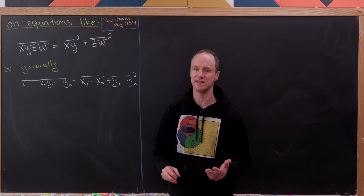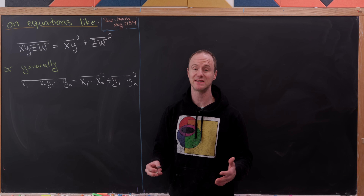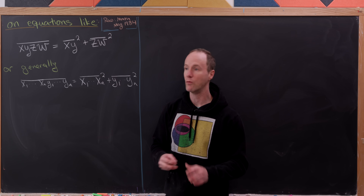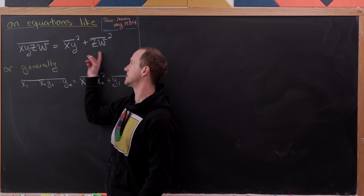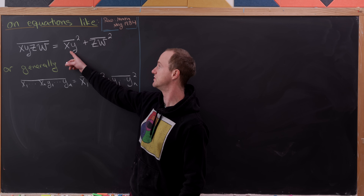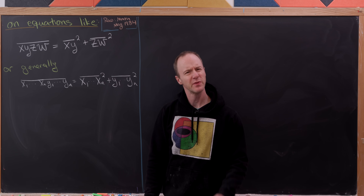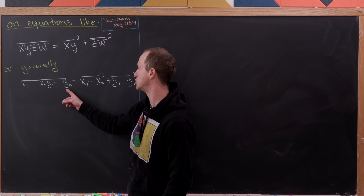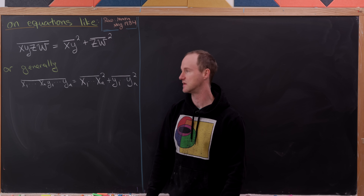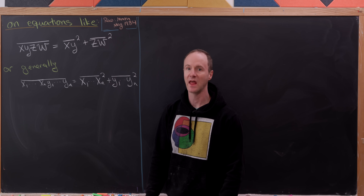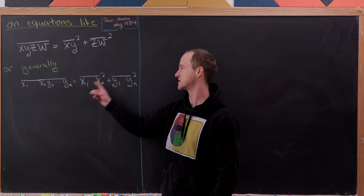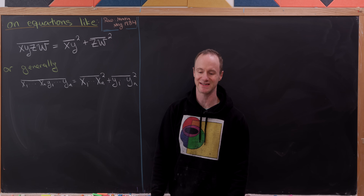We're assuming that x, y, z, and w are base 10 digits, so they're between 0 and 9. Our goal is to determine when it's possible for this four-digit number to equal the sum of the squares of the first two digits and the second two digits. More generally, for a 2n-digit number with first n digits x1 through xn and second n digits y1 through yn, when does it equal the square of the first n digits plus the square of the second n digits?